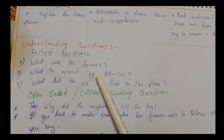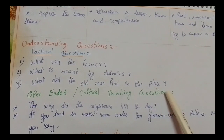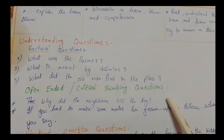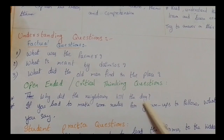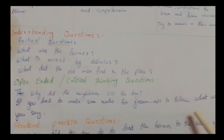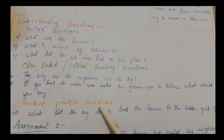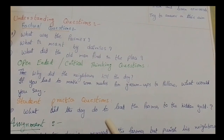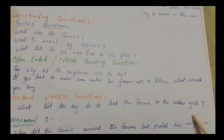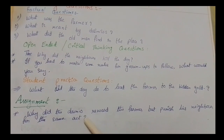Understanding questions — first, factual questions: what was the farm, or what is meant by demos, and what did the old man find in the place. Next, open-ended or critical thinking questions: why did the neighbors kill the dog, and if you had to make some rules for grown-ups to follow, what would you say? Student practice questions: what did the dog do to lead the farmer to the hidden gold?